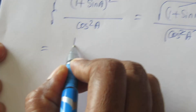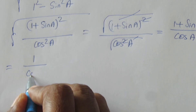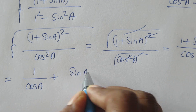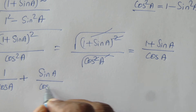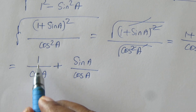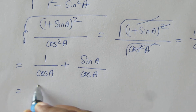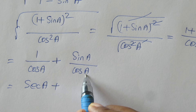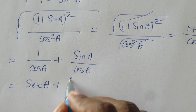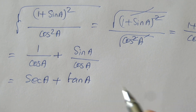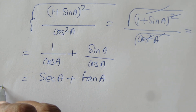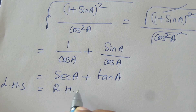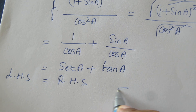So we get 1 by cos A plus sin A by cos A, which equals sec A plus tan A. So the left hand side equals the right hand side. Hence proved.